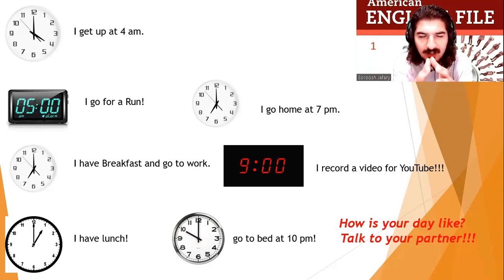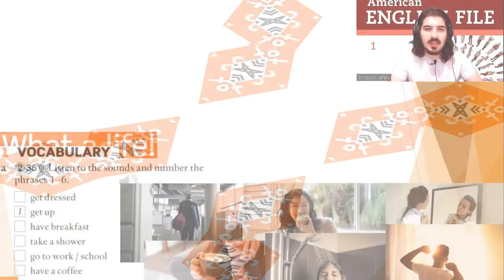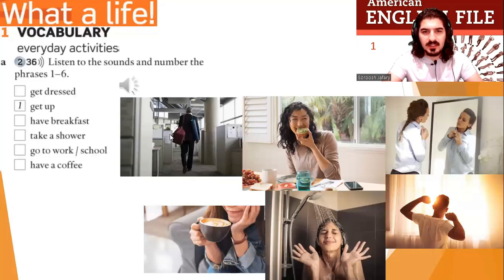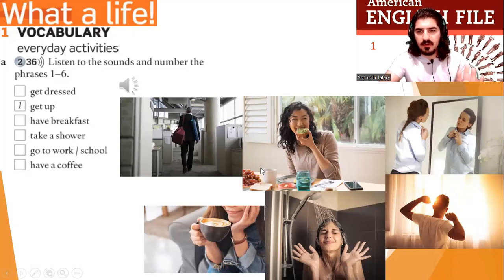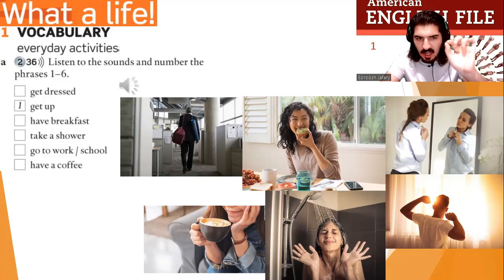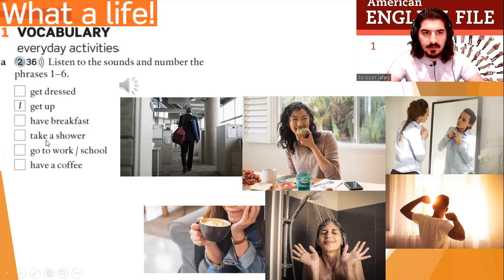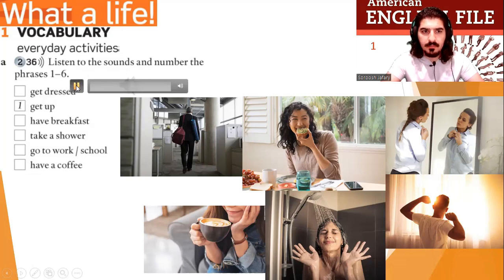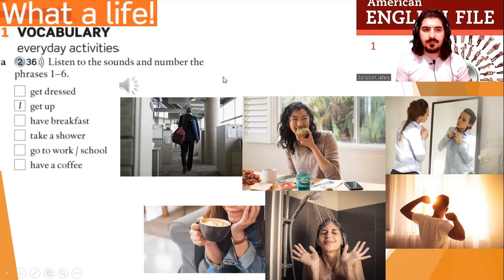Very well. Let's continue. Everybody, these are some activities. In the picture — just one example: 'get up.' Listen to the sounds and number the phrases one to six. The phrases are: get dressed, get up, have breakfast, take a shower, go to work or school, have a coffee. Listen and number — track 2.36.